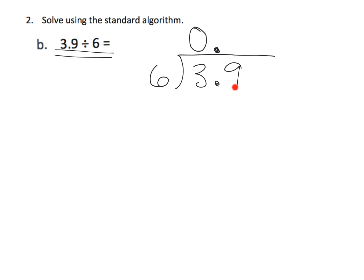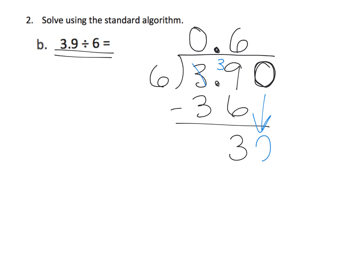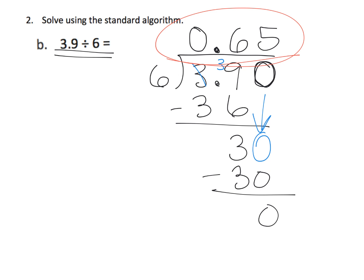Those three units get cashed in for tenths — 10, 10, 10 — giving us 39 tenths. Dividing 39 tenths into six groups means each group gets six, using 36, leaving 3 tenths remaining. We draw a zero for hundredths and cash in the 3 tenths for 30 hundredths. Thirty hundredths divided among six groups gives five hundredths each, using all 30 with nothing left over. The answer is 0.65.